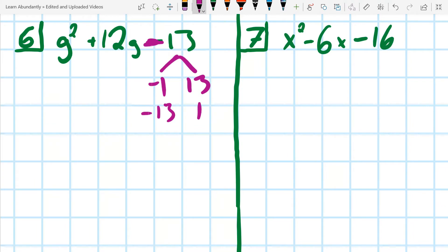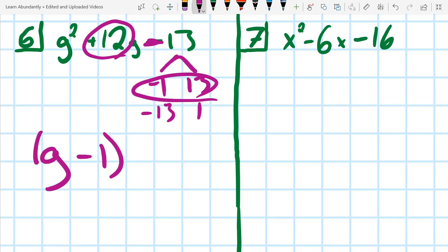Which one of these two gives me a positive 12? Well, since it's positive, the big number must be positive 13. G minus 1. G plus 13.